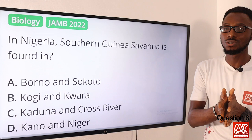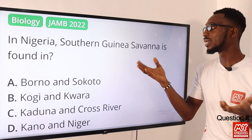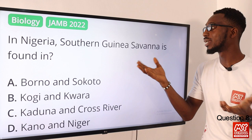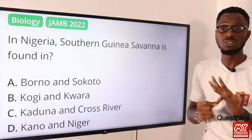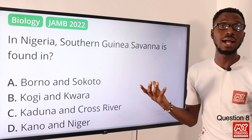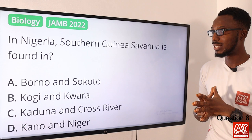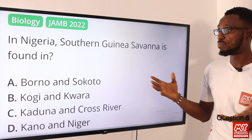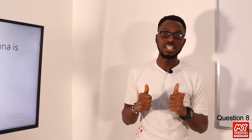Question eight: in Nigeria, the southern guinea savannah is found where? We have types of guinea savannah; based on the options provided, we have Kaduna, Kwara, and Benue listed. The closest answer for the southern guinea savannah based on available options would be option B — Kogi and Kwara.